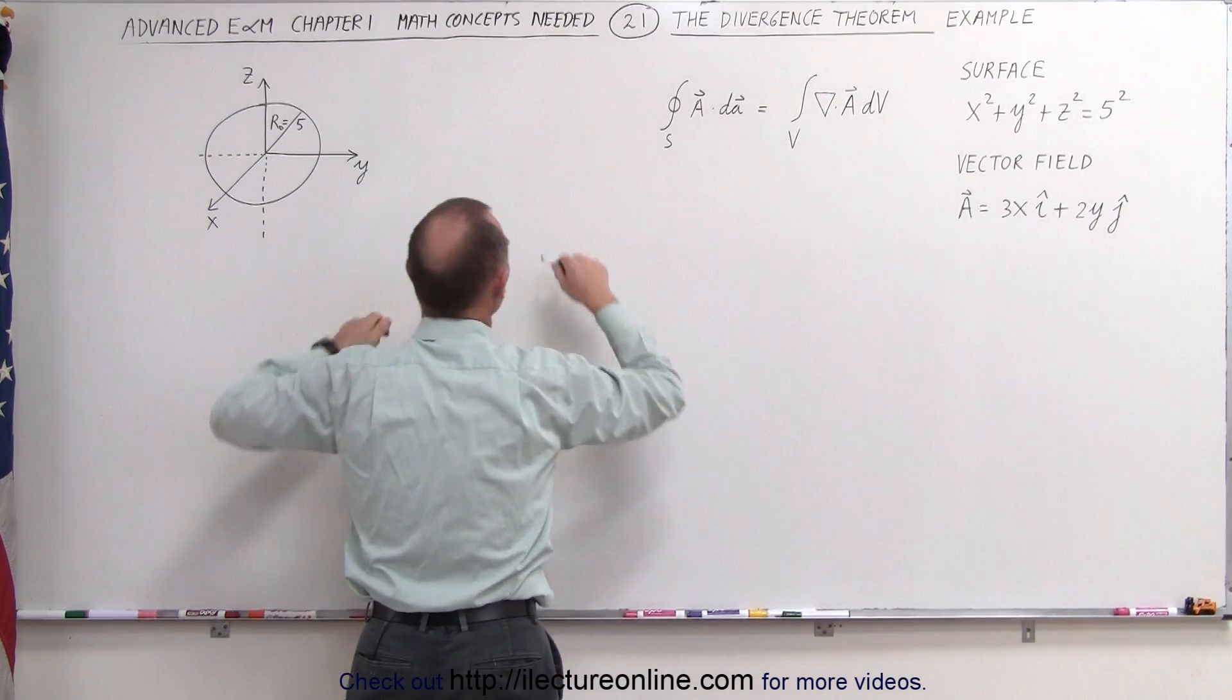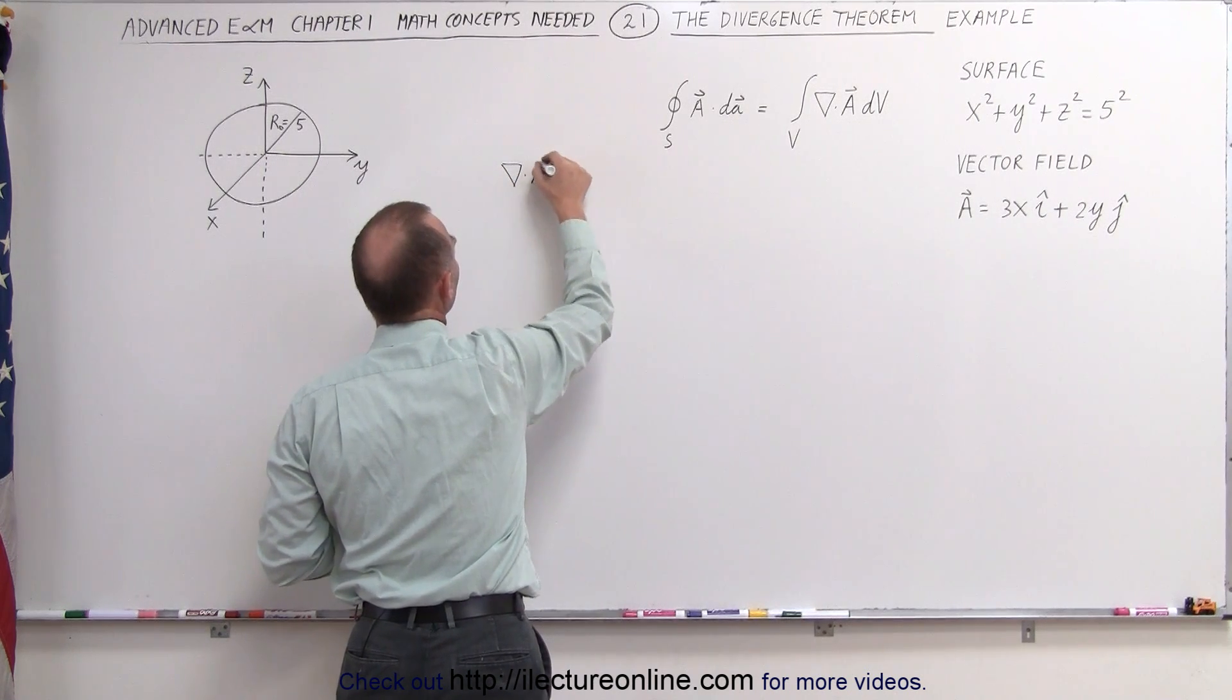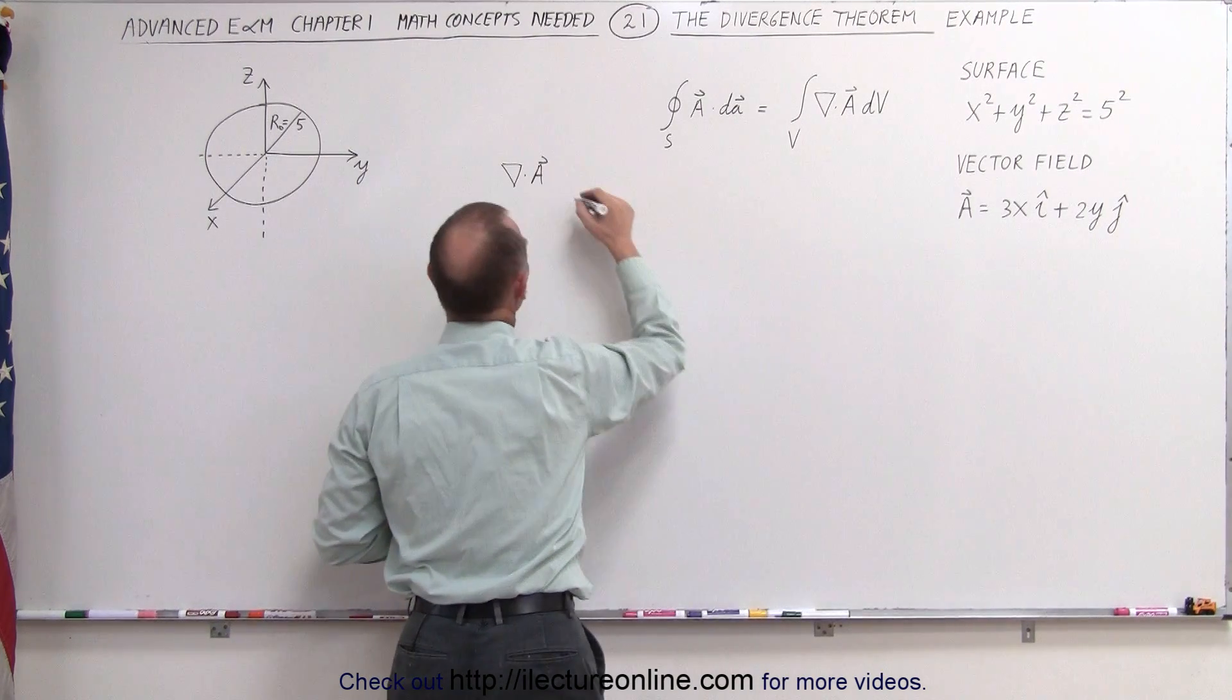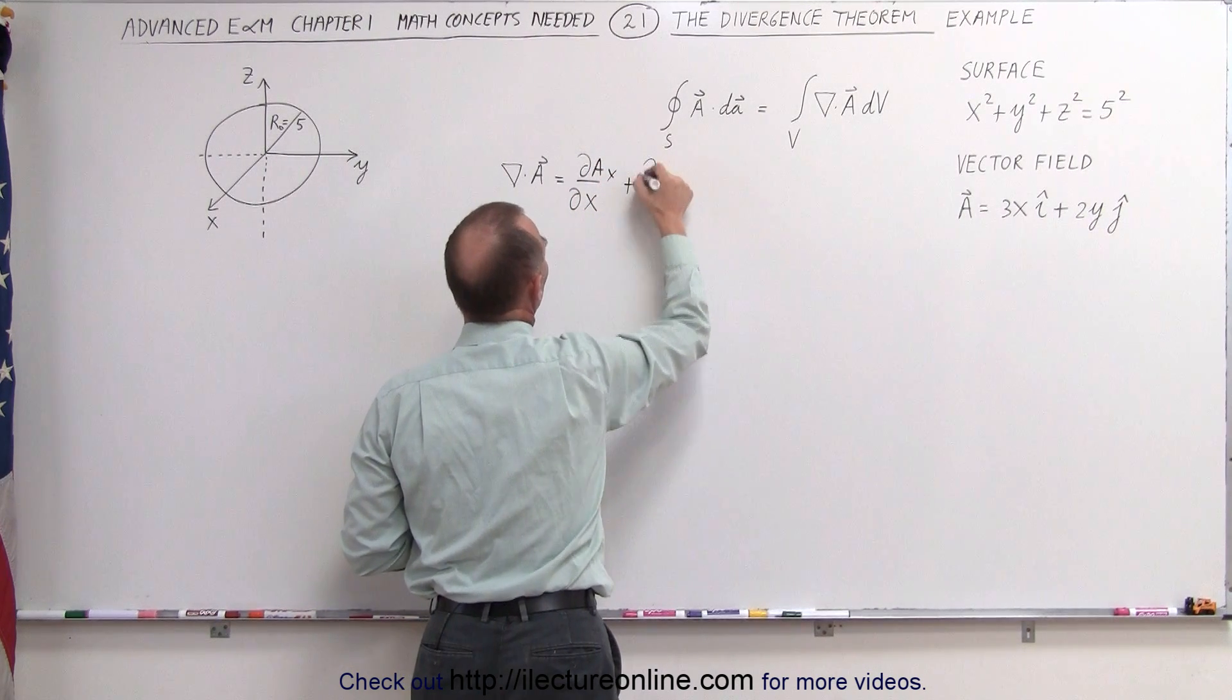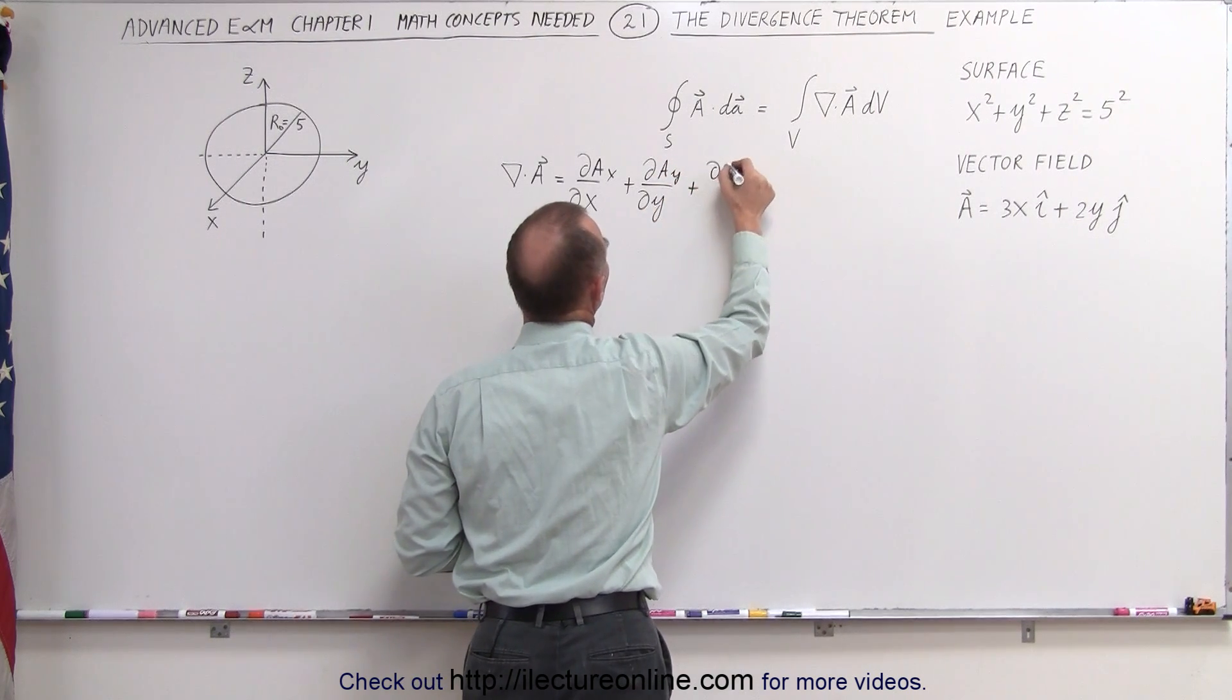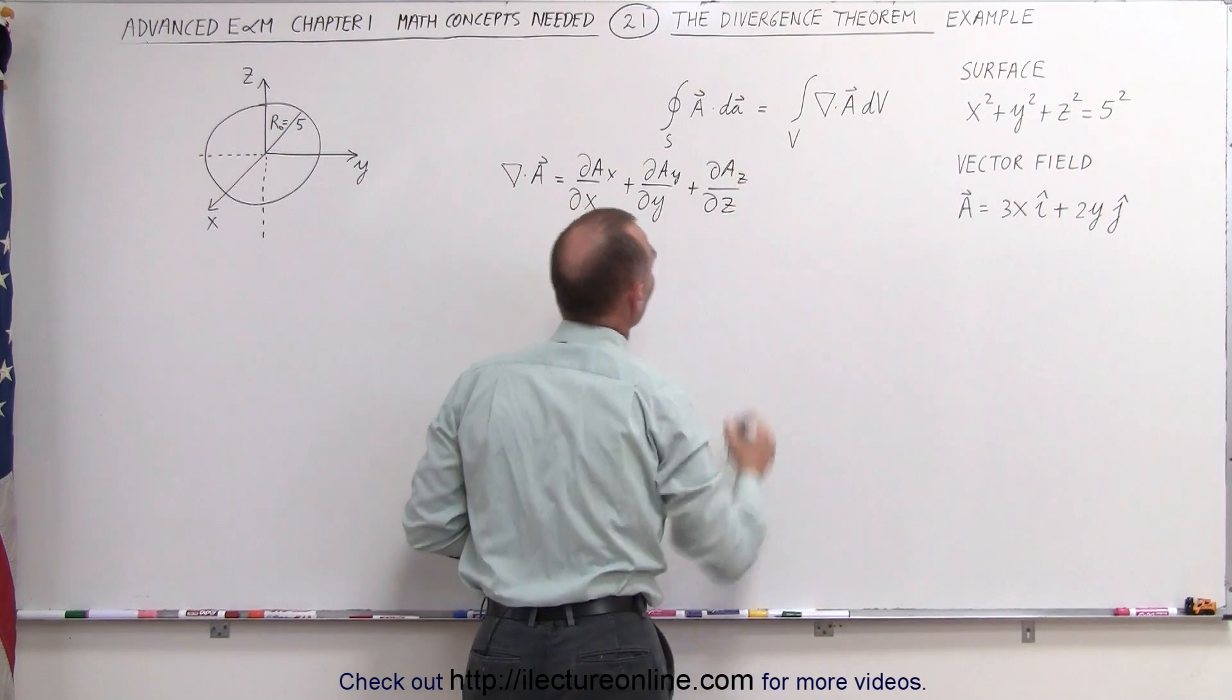So what that means is we're going to now have the divergence of A. And since A is written in x, y, z coordinates, we can say that this is equal to the partial derivative with respect to x of the x component of A plus the partial derivative with respect to y of the y component of A plus the partial derivative with respect to z of the z component of A.